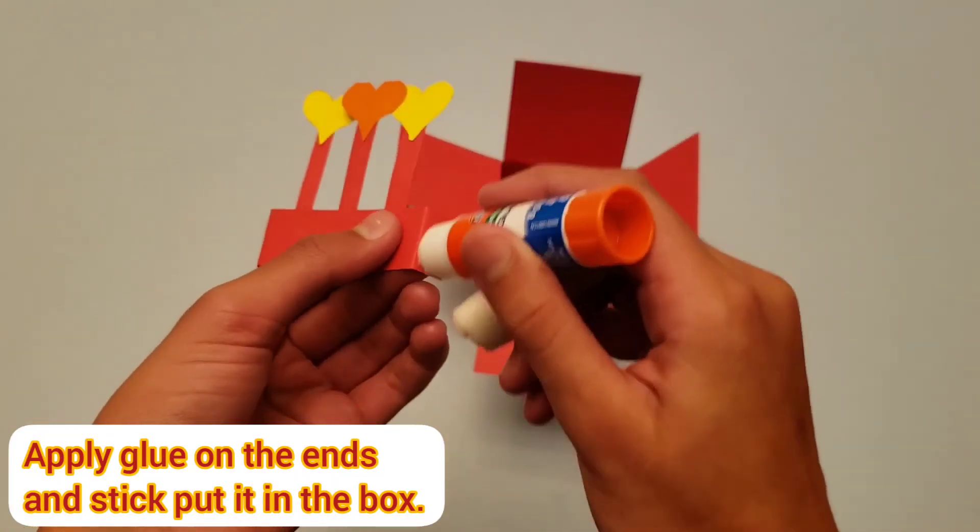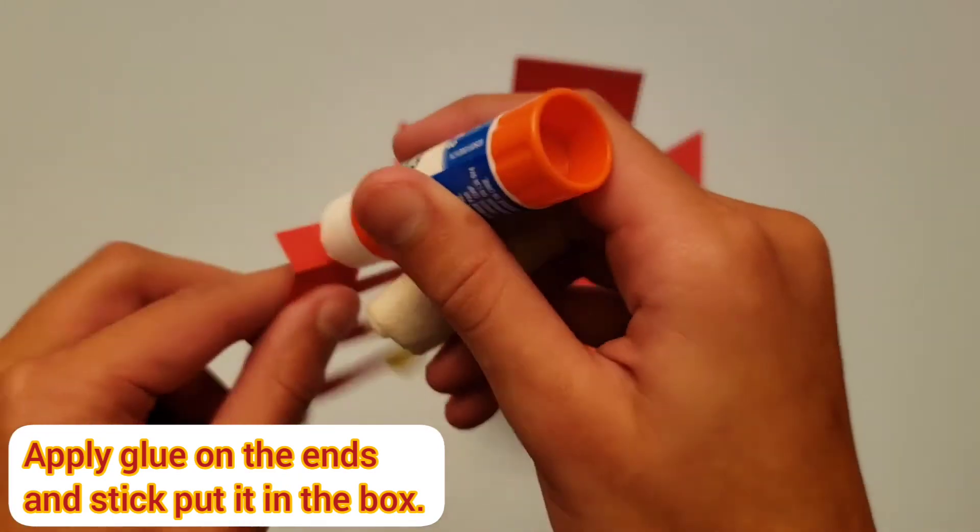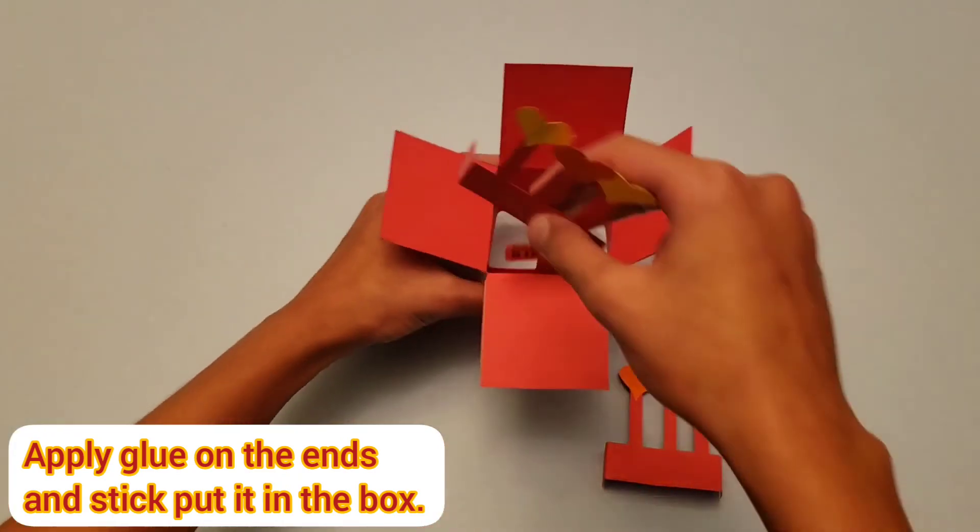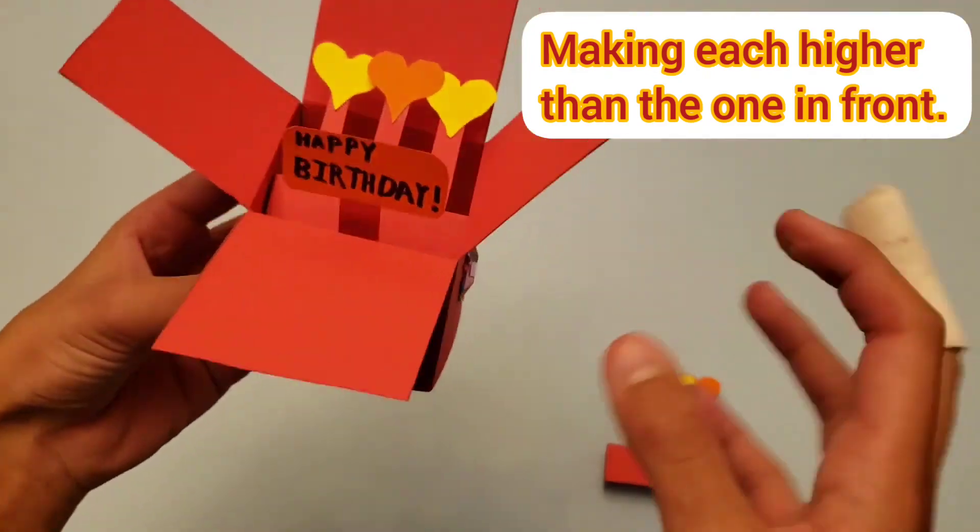Now once you've got both of those, apply some glue at the ends, and stick them on the inside of the gift box, slightly higher than the message.